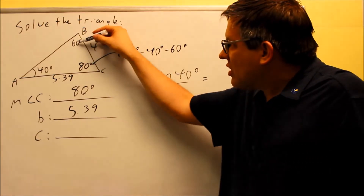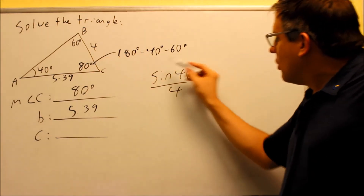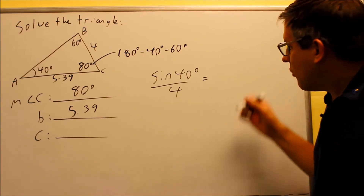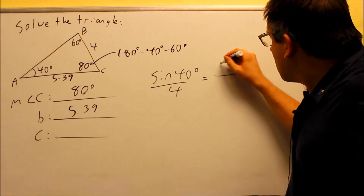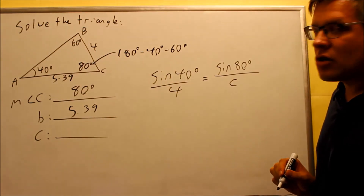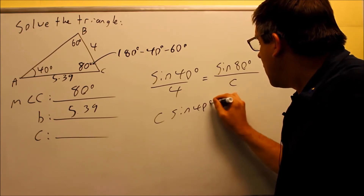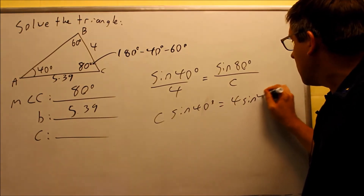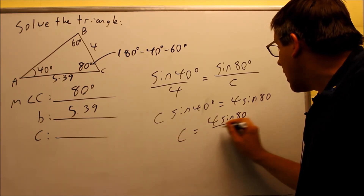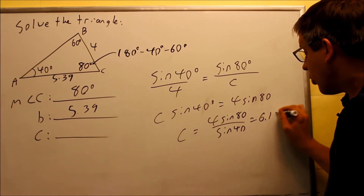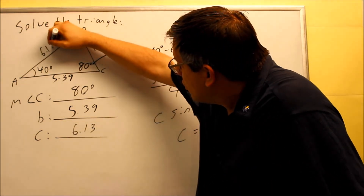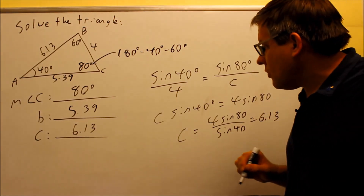You could also use sine 60 over 5.39 as your ratio, but it's easier to use the original given ratio to avoid dealing with decimals. Setting sine 40 over 4 equal to sine 80 over C — using 80 degrees because that's the angle opposite side C — and cross multiplying gives C times sine 40 equals 4 times sine 80. Dividing both sides by sine 40 gives 4 sine 80 divided by sine 40, which equals 6.13. Now we have all three sides and all three angles.